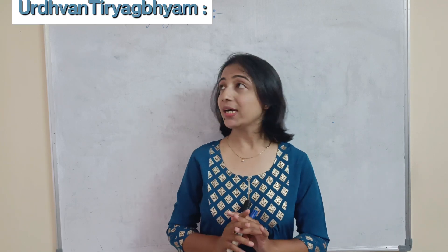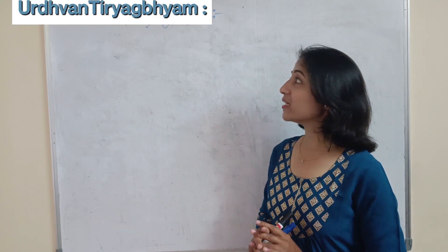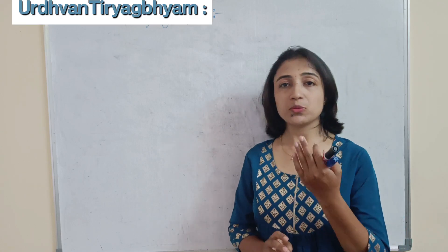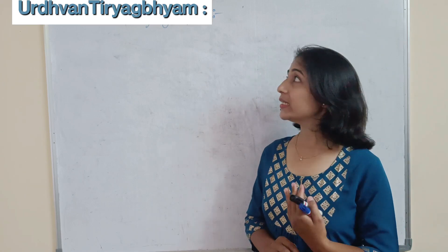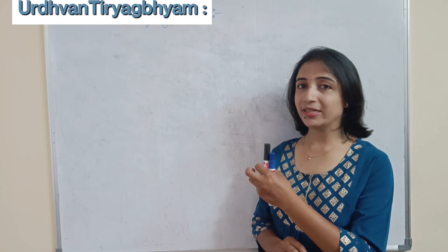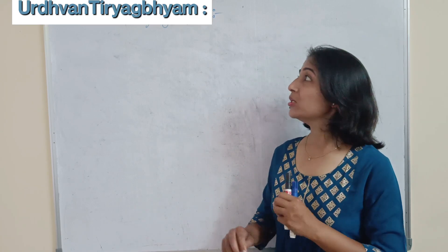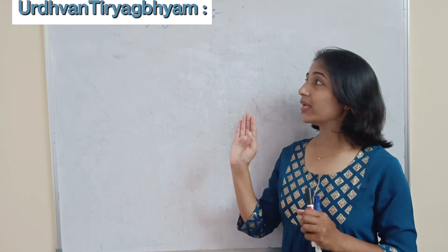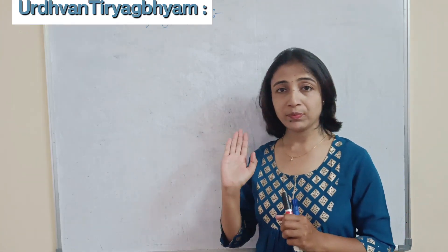Hi everyone! Welcome to the next lecture on Vedic Maths. In this video we are going to discuss an interesting method to find the multiplication of numbers. The name of the method is Urdhava Tiryag Bhayam. Urdhava means vertical, Tiryag means cross. So this method is nothing but the vertical and cross method.